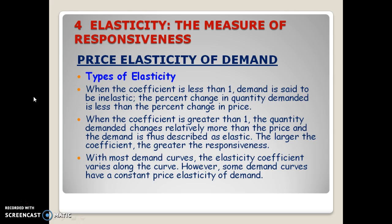There are different types of elasticity. When the absolute value is less than one, a good is said to be inelastic, which means the change in quantity demanded is much less than the change in price. For example, if a store raises prices 20%, consumers might buy only 15% less — not as great a change as expected.